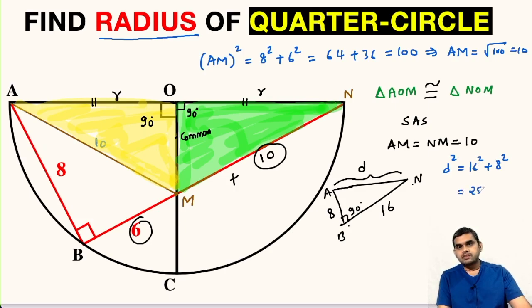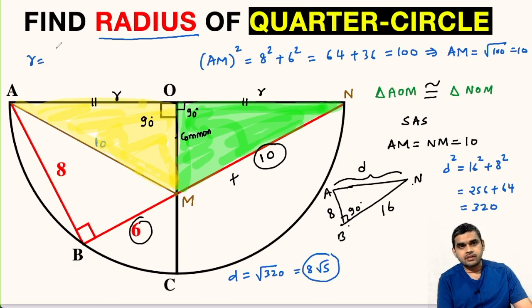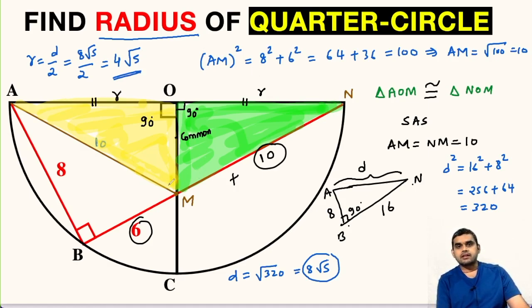So d squared will be equal to 16 squared plus 8 squared, that is equal to 256 plus 64. So this will be 320. So d will be square root of 320, which is 8 root 5. But this is not our answer. This is the diameter, and diameter is 2 times the radius. So radius will be equal to diameter upon 2. So 8 root 5 divided by 2. This will be 4 root 5.